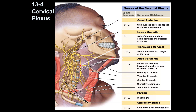Then you have the transverse cervical nerve, which supplies the anterior triangle of the neck. The anterior triangle is formed by a midline, the sternocleidomastoid muscle, and the lower part of the mandible. This nerve provides sensory supply to the skin of that area.